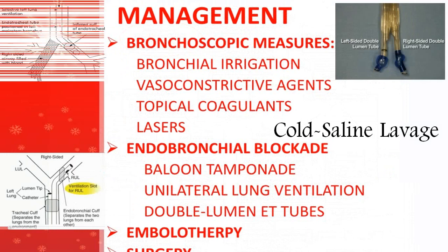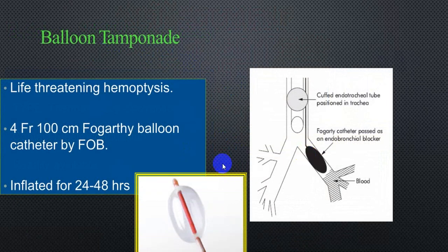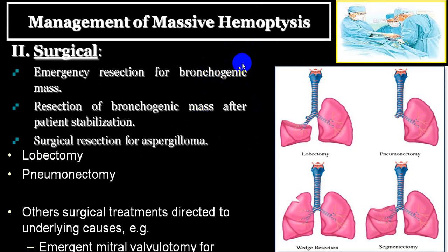Bronchoscopic management for massive haemoptysis includes bronchial irrigation, vasoconstrictors, topical coagulants, laser therapy, and cold saline lavage. Endobronchial blockage can be done by balloon tamponade, unilateral lung ventilation, or double-lumen endotracheal tubes. Embolotherapy is another option. Surgical options — the last resort — include surgical resection: lobectomy, pneumonectomy, segmentectomy, or wedge resection depending on which portion of the lung is involved. Instruments used include electrocautery for thermal destruction, balloon tamponade, and airway blockade by silicone spigot.